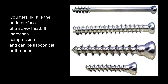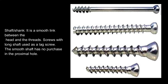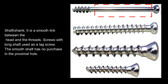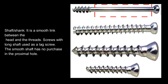Countersink: it is the undersurface of a screw head. It increases compression and can be flat, conical, or threaded. Shaft (Shank): it is a smooth link between the head and the threads. Screws with a long shaft are used as a lag screw. The smooth shaft has no purchase in the proximal hole.